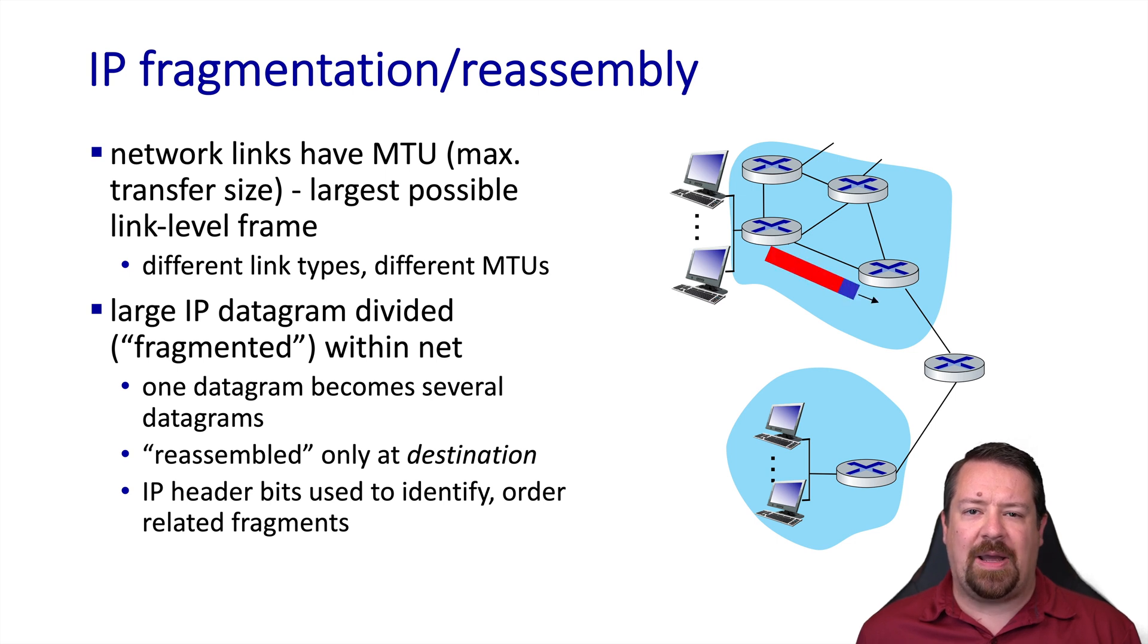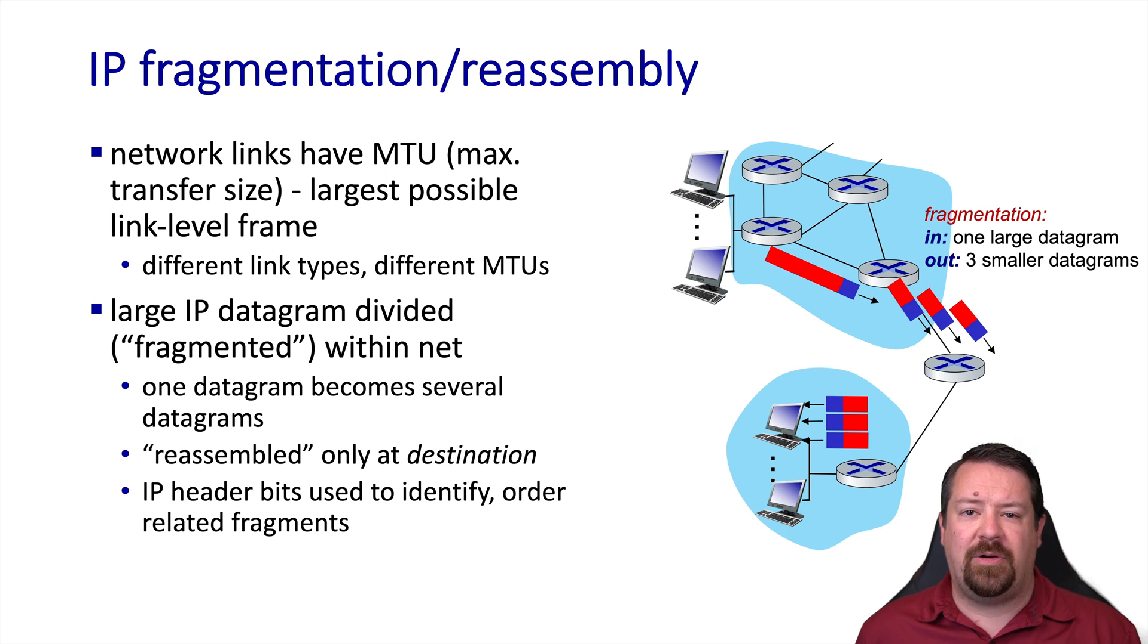So we start out with our large packet and when it reaches the small MTU link it gets broken up into multiple small packets. Each of these has a complete IP header of its own. So the three small datagrams have all the information that they need to continue traversing the network and reach the destination. When the destination receives them, the IP layer reassembles them into one large datagram before handing them off to the transport layer.